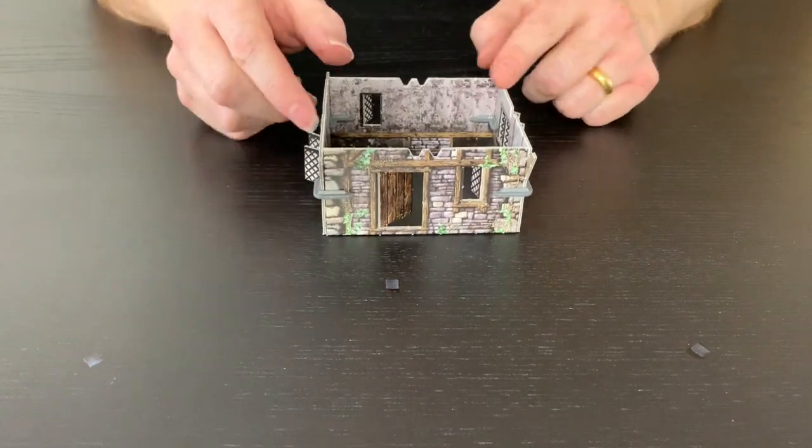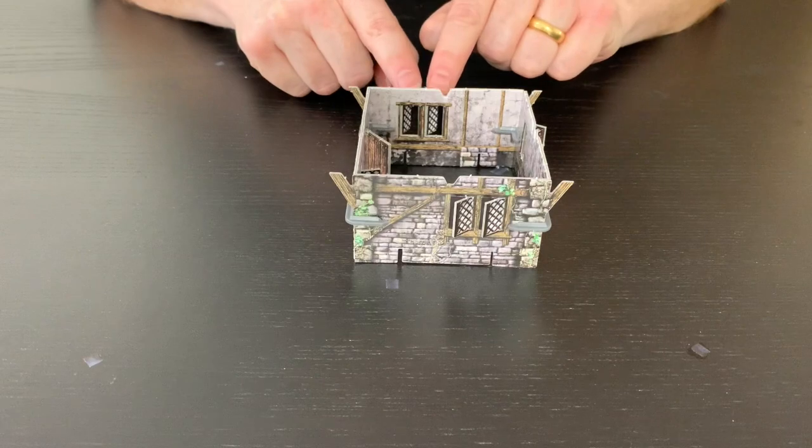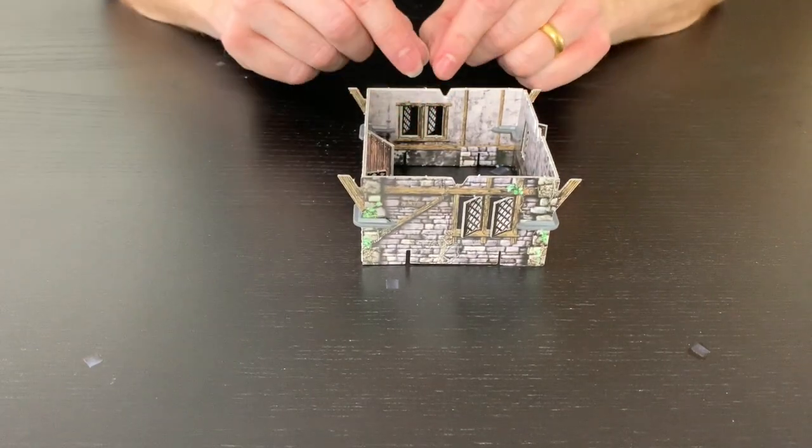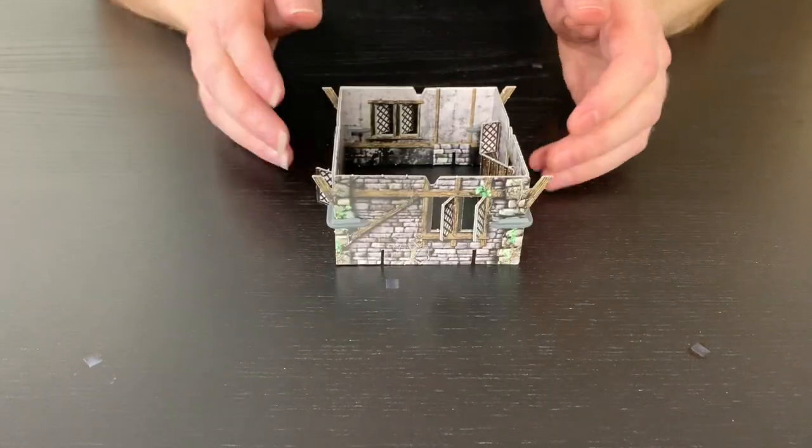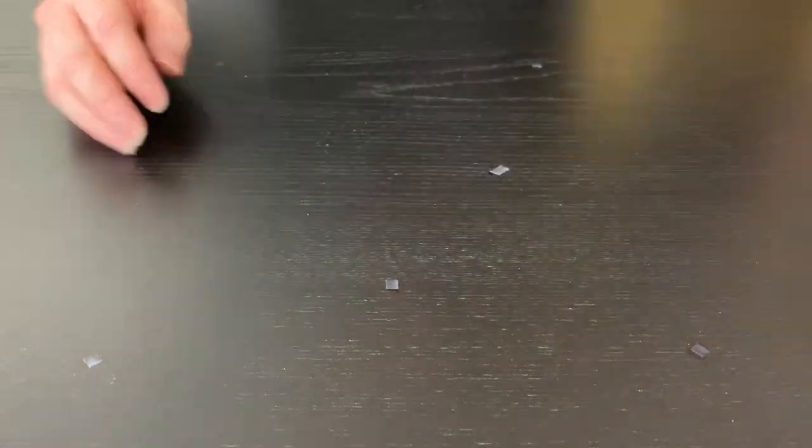Okay, that's your ground floor there. On this particular build, be extra careful when opening the little double window here because you've got one window on a thinner piece of card, so you really need to just be careful when opening that one. But yeah, otherwise that's the ground floor. I'm now going to pop out the floor tile for the upper floor and assemble the upper floor.